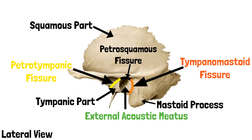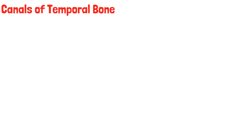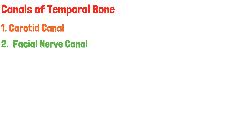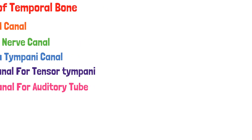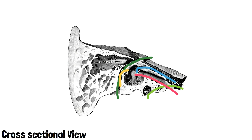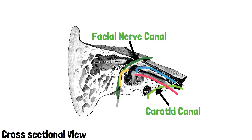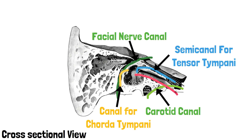Before concluding, let's discuss the canals of the temporal bone. These include the carotid canal for the internal carotid artery, the facial nerve canal, the chorda tympani canal, the semicanal for the tensor tympani muscle, and the semicanal for the auditory tube. In the cross-sectional view, the light green line indicates the passage of the carotid artery through the carotid canal, the dark green line indicates the passage of the facial nerve, yellow for the chorda tympani canal, blue for the semicanal for the tensor tympani muscle, and pink for the semicanal for the auditory tube.